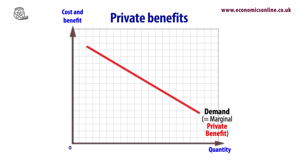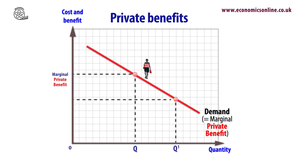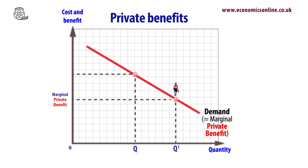In a free market economy, with consumers acting rationally, demand reflects the expectation of private benefits. This generally declines with consumption, and graphically the demand curve slopes down. If there is no external benefit, then marginal private benefit equals marginal social benefit.